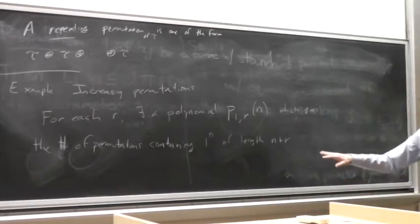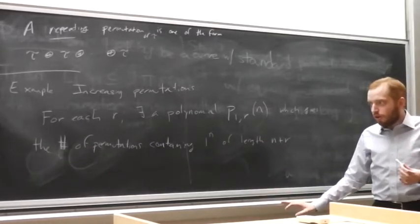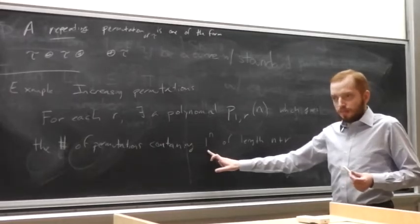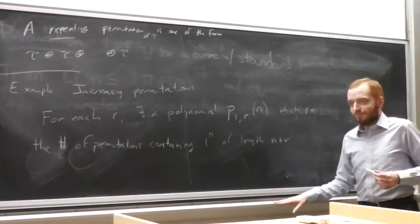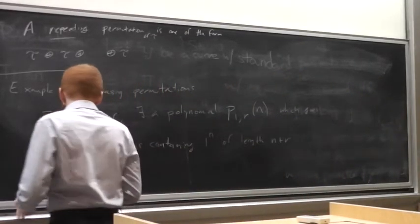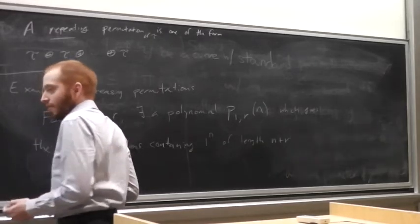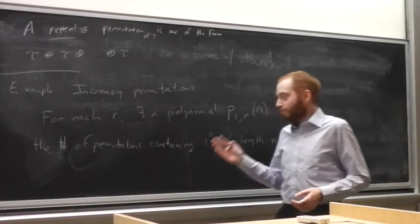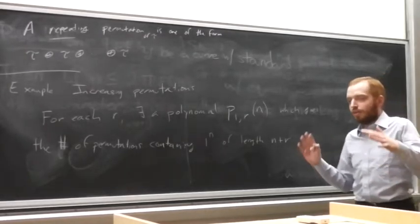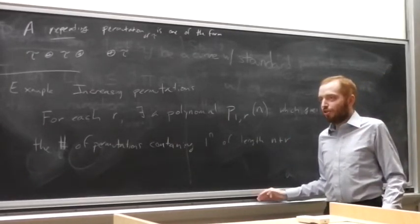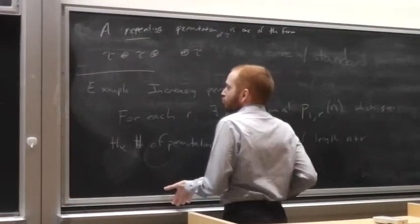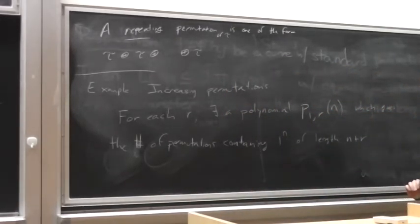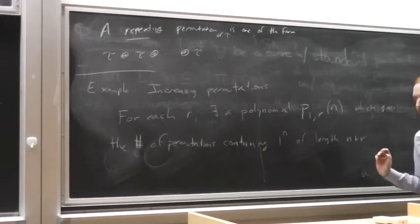These polynomials let us calculate, for example, the number of permutations containing the increasing pattern of length Googol, of length Googol plus 30. It's a big number — but not as big as the number avoiding it, since this grows polynomially whereas the total number grows like n factorial. Googol factorial is a lot bigger than C(Googol), so it's much easier to count the ones containing the pattern.